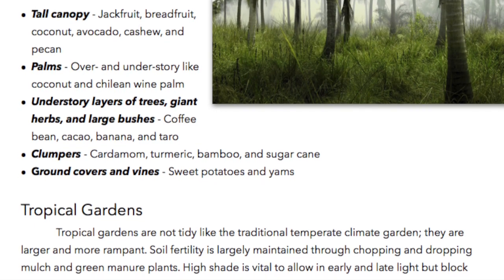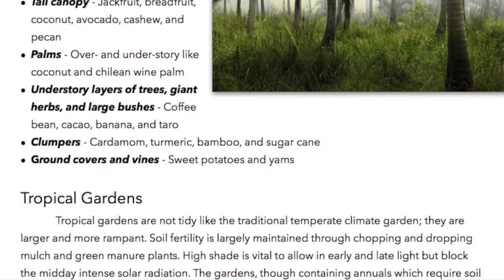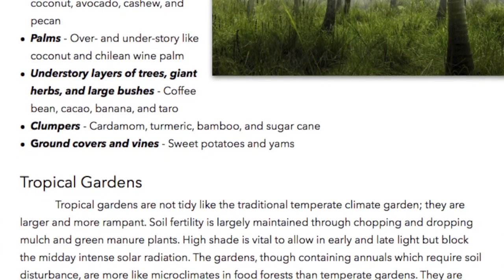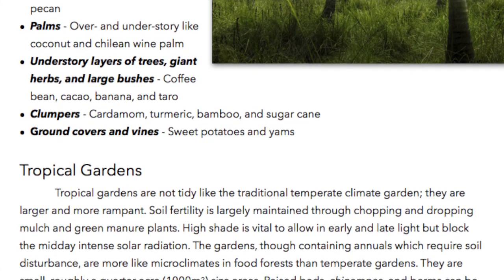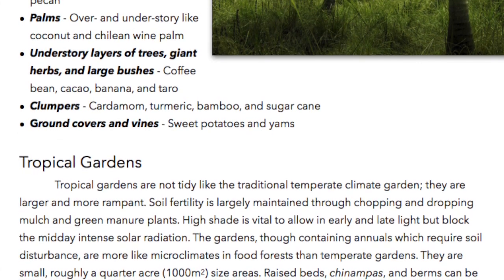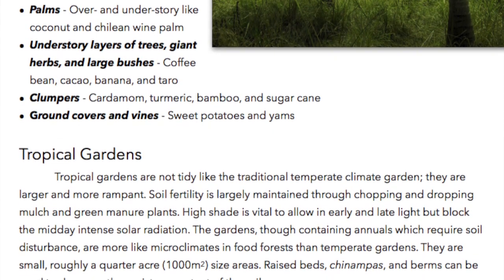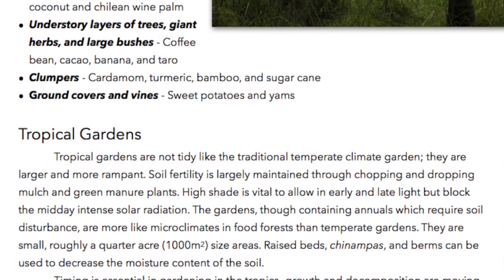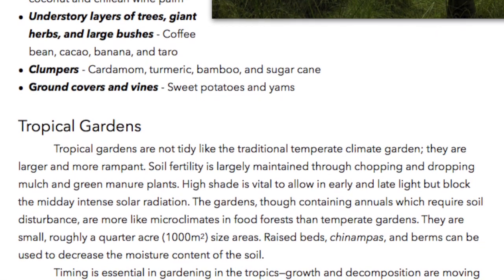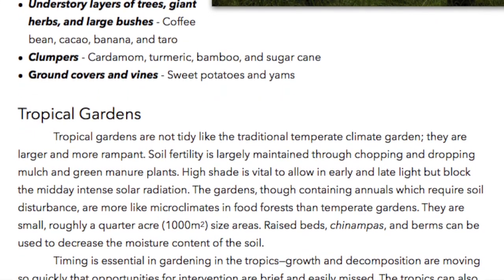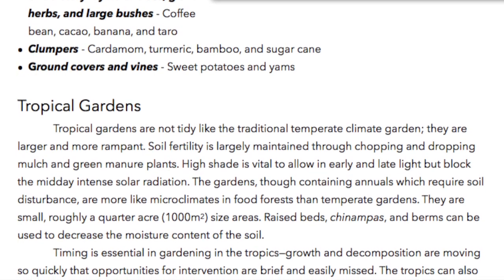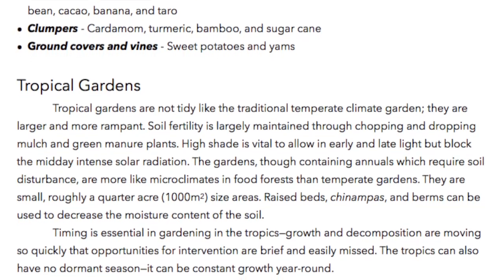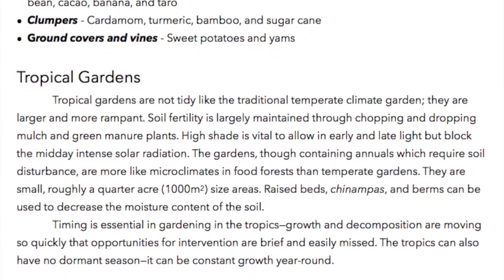Tropical Gardens. Tropical gardens are not tidy like the traditional temperate climate garden — they are larger and more rampant. Soil fertility is largely maintained through chopping and dropping mulch and green manure plants. High shade is vital to allow early and late light but block the midday intense solar radiation. The gardens, though containing annuals which require soil disturbance, are more like microclimates in food forests than temperate gardens. They are small — roughly a quarter acre, about a thousand square meters.